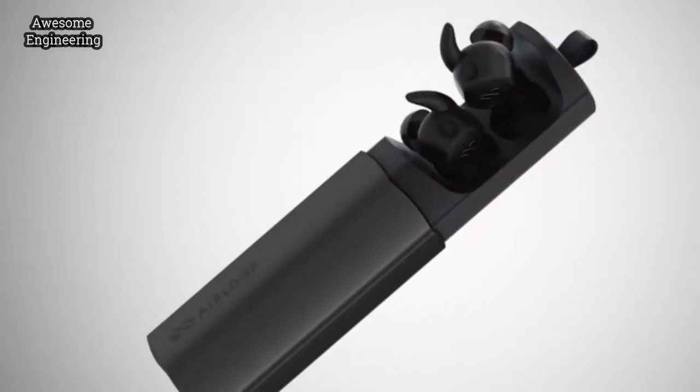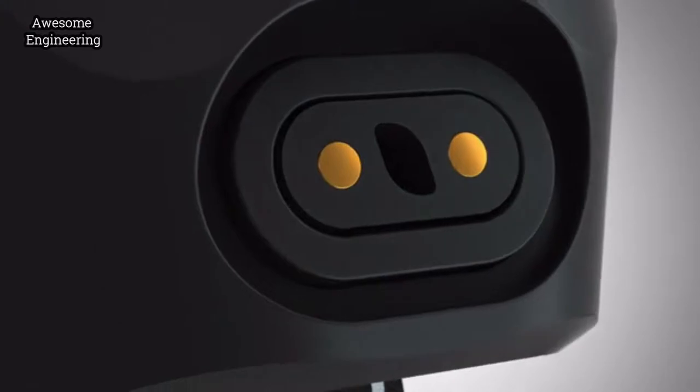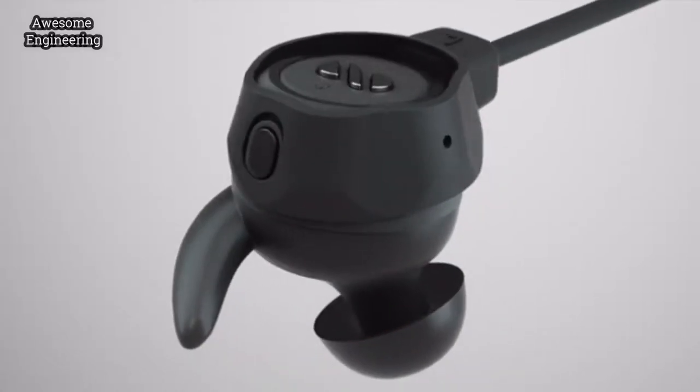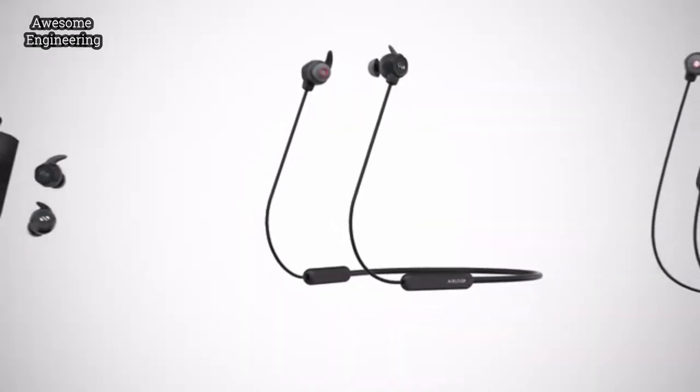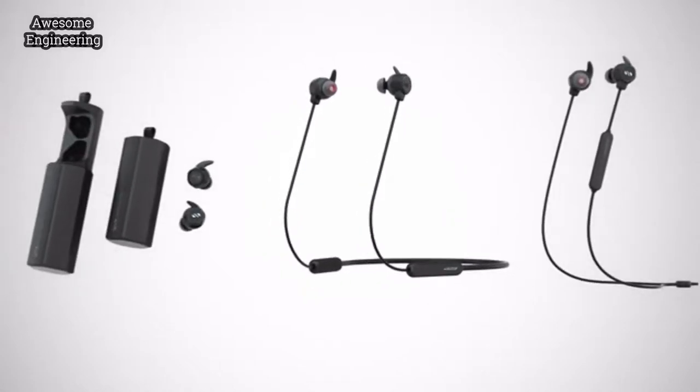Air Loop is an earphone that transforms. Its powerful magnetic links snap together to form a sport band or a neck band. Together these three modes give you an option for any situation.